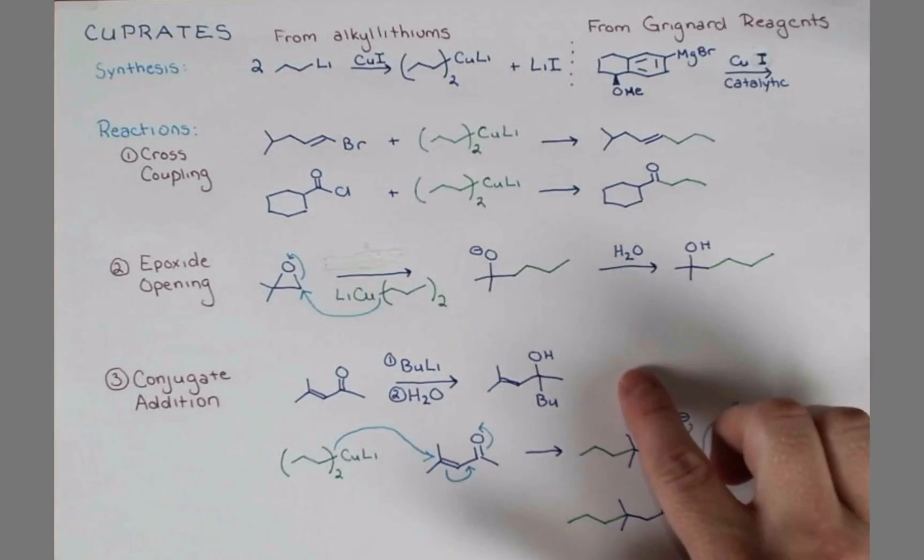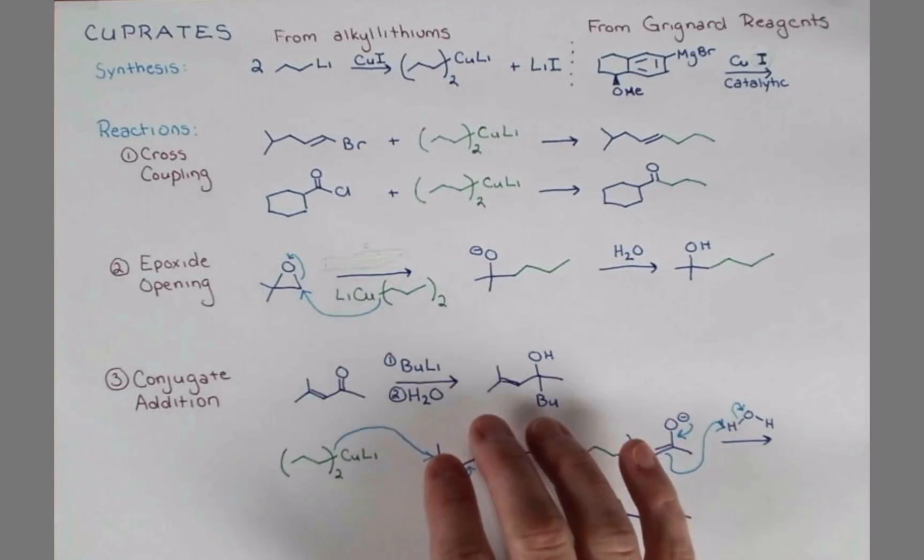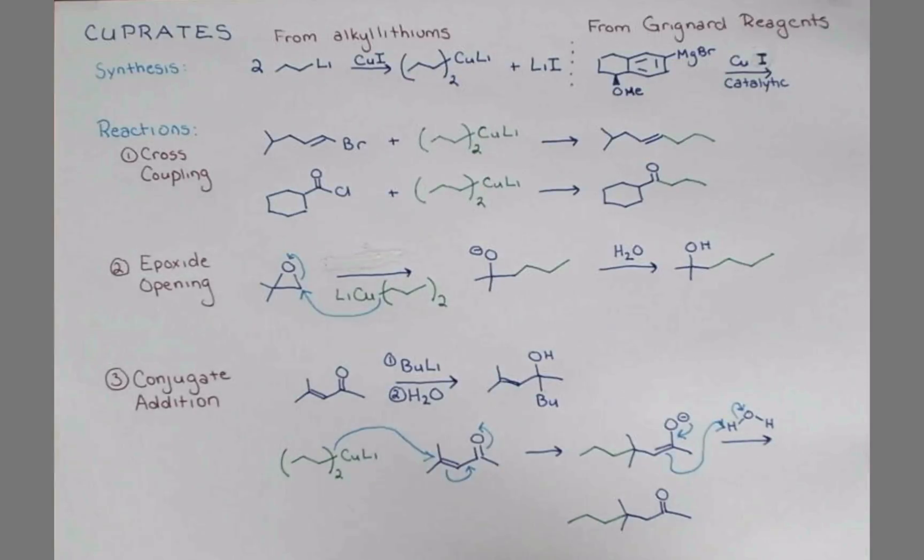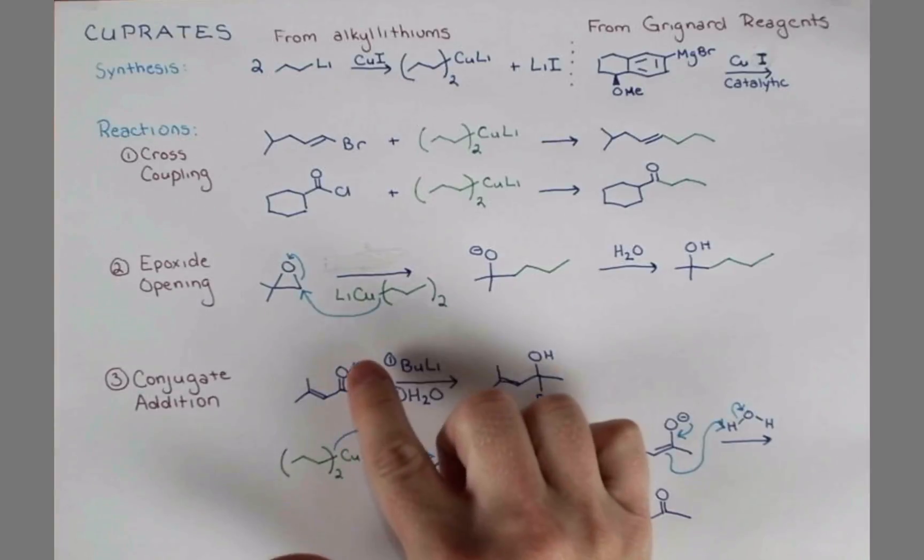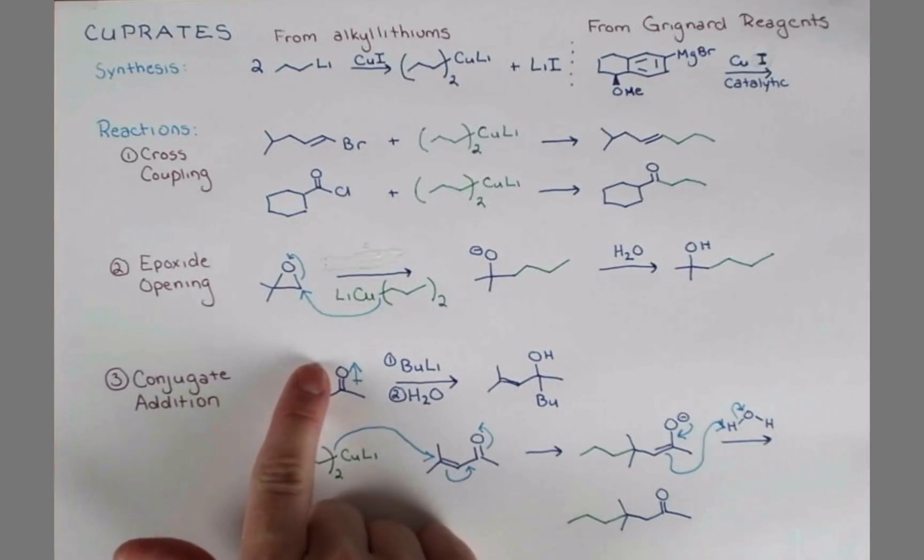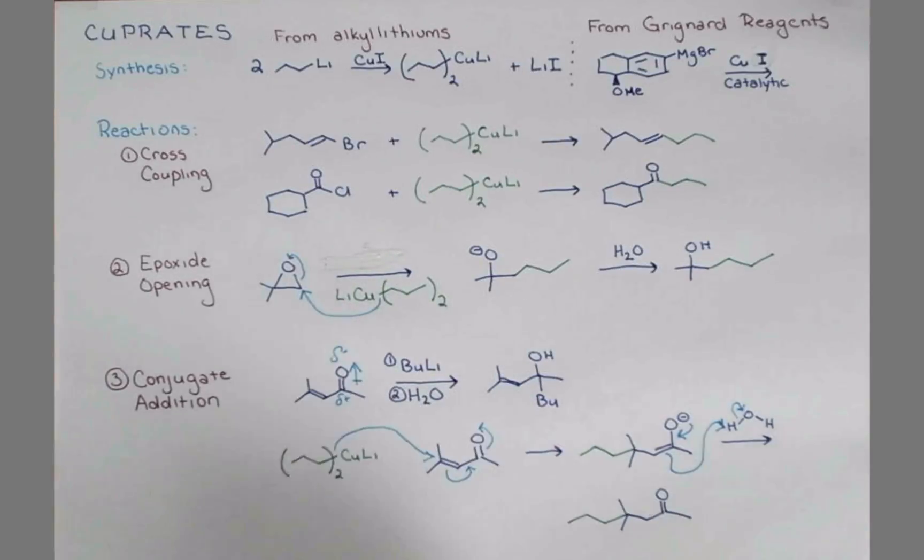Now the reason we see this difference is because alkyl lithiums and Grignard reagents, they have a lot of ionic character in the bond. And so we have like a C- and it's got a counter ion. It's balanced with that lithium, but the bond here has very little covalent character. It has quite a lot of ionic character. And so it's going to be attracted to the carbonyl because the carbonyl has this dipole that puts a delta minus on the oxygen and a delta plus on the carbon. So this addition is governed by ionic interactions with this dipole here.